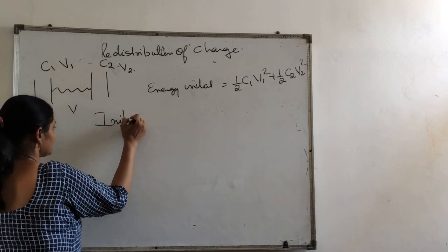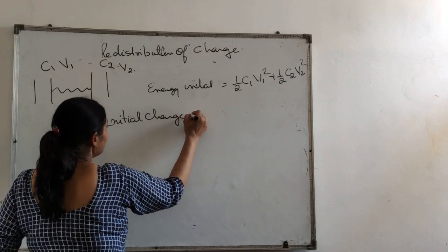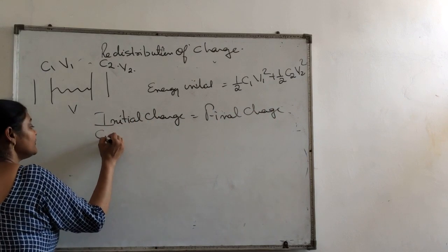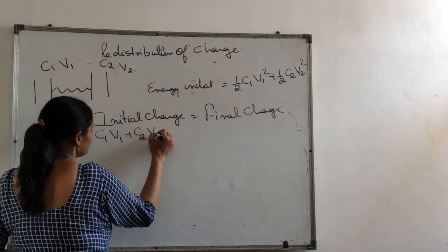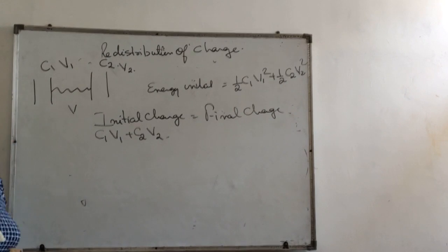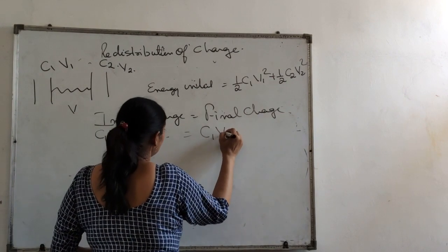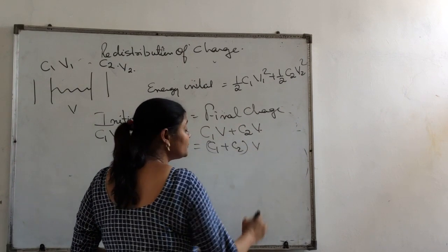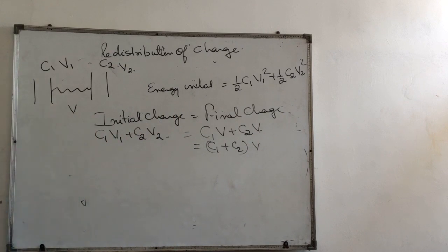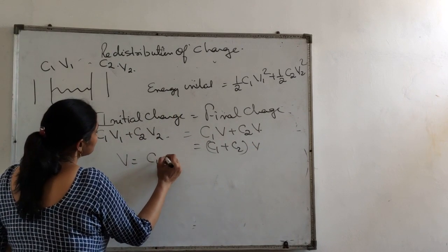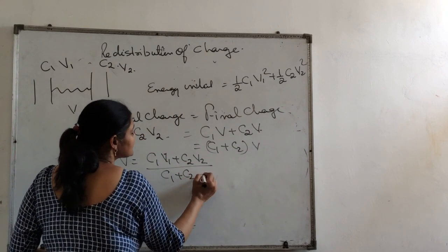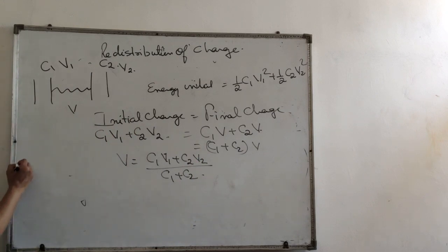Initial charge should be equal to final charge. So initial charge is C1 V1 plus C2 V2, and final charge is C1 V plus C2 V. Children, the common potential acquired by the capacitors will be V equals C1 V1 plus C2 V2 upon C1 plus C2.